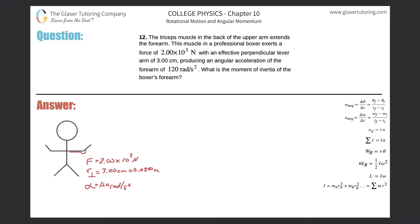Number 12. The triceps muscle in the back of the upper arm extends the forearm. The muscle in a professional boxer exerts a force of 2×10³ newtons with an effective perpendicular lever arm of 3 centimeters, producing an angular acceleration of the forearm of 120 radians per second squared. What is the moment of inertia of the boxer's forearm?